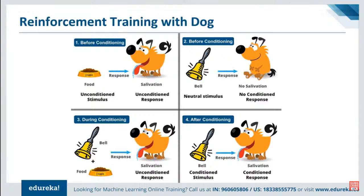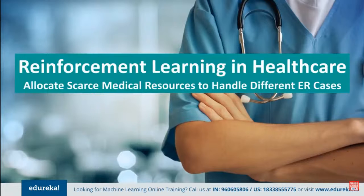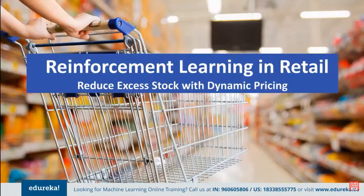Now let's see how reinforcement learning is applied in banking, healthcare, and retail. In banking, it is used to create a 'next best offer' model for a call center by building a predictive model that learns over time as users accept or reject offers made by sales staff. In healthcare, it is used to allocate scarce medical resources to handle different types of ER cases by building a Markov decision process that learns treatment strategies for each type of ER case. In retail, it can reduce excess stock with dynamic pricing by building a dynamic pricing model that adjusts prices based on customer responses to offers.